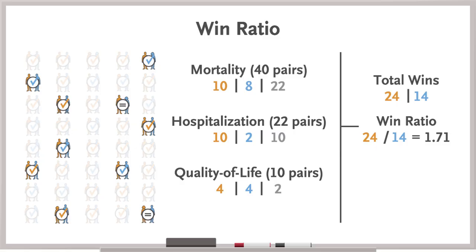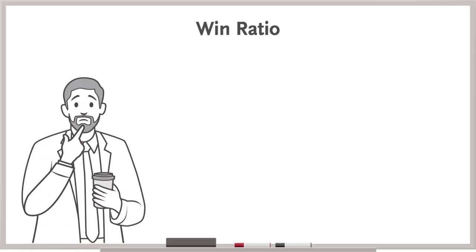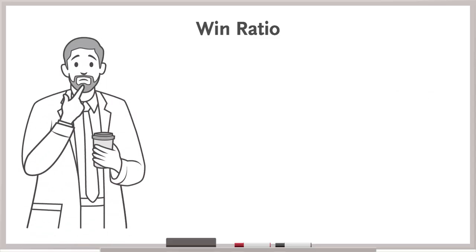You can calculate an associated 95% confidence interval and p-value. Coffee in hand, you ponder a few issues related to using a win-ratio analysis.